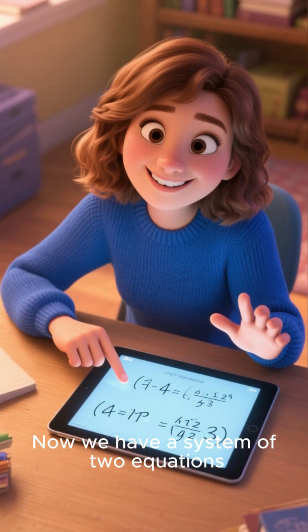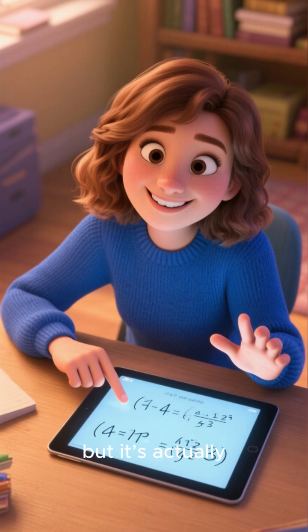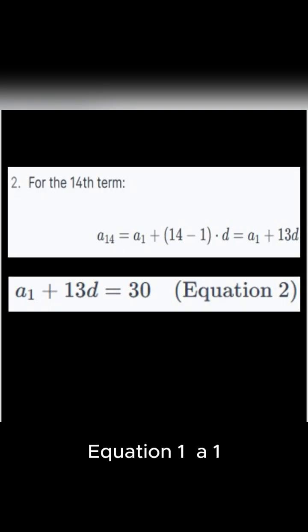Now we have a system of two equations. It might look scary, but it's actually the key to solving everything. Equation 1: a_1 + 9d = 17. Equation 2: a_1 + 13d = 30.